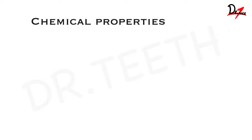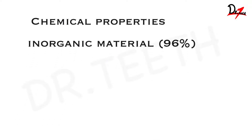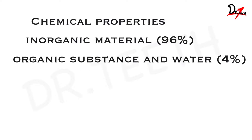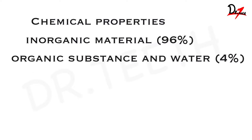Hello everyone, assalamu alaikum, welcome back to my channel. Today we are going to talk about the chemical properties of enamel. Enamel has mainly inorganic material and organic material. Inorganic material is about 96 percent, and we have a small amount of organic material — organic substance and water — which constitutes a total of four percent.